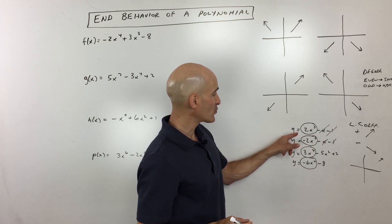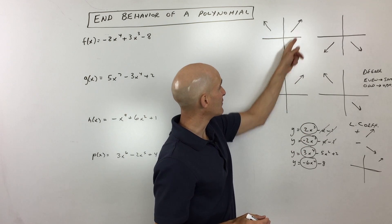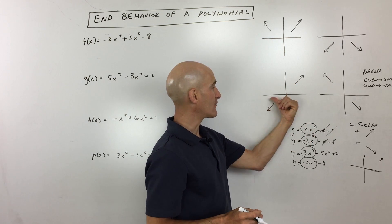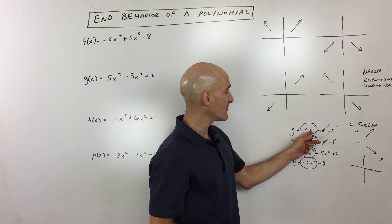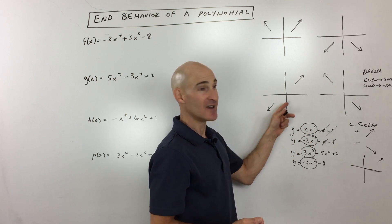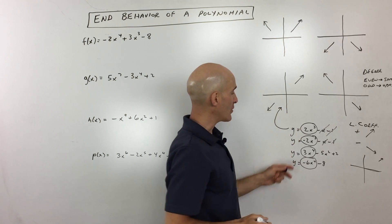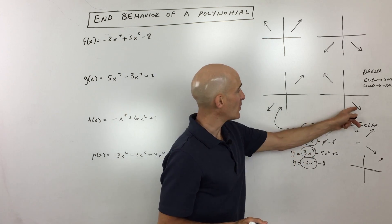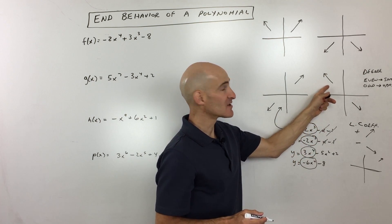Looking at the first example, y equals 2x cubed: the leading coefficient is positive, so it goes up to the right. It's an odd degree, so it goes the opposite way to the left — down to the left. If we plug in negative 10, we get negative 1,000 times 2, which is negative 2,000, a large negative number, confirming it goes down to the left. For the second example, y equals negative 2x cubed: a negative leading coefficient means it goes down to the right, and the odd degree means it goes the opposite direction to the left — up to the left.